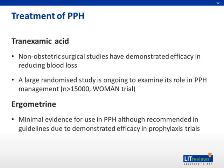Other forms of medical treatment for PPH include tranexamic acid. This is a non-obstetric surgical study that has demonstrated efficacy in reducing blood loss. A large randomized study — the WOMEN trial — is now ongoing to examine its role in PPH management, and it will be interesting to note the results. The last medication discussed is ergometrine; however, there is minimal evidence for its use in PPH, although it is recommended in guidelines due to demonstrated efficacy in prophylaxis trials.